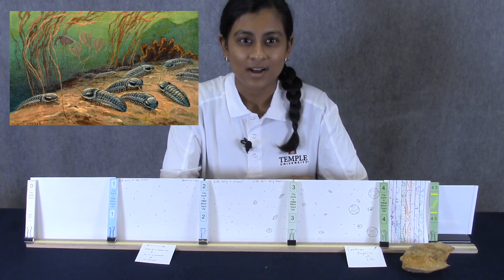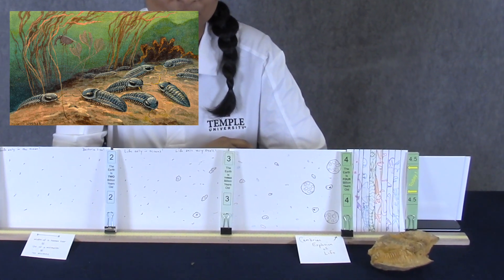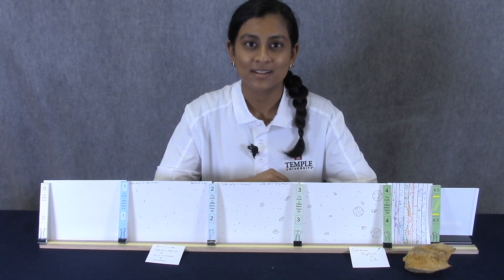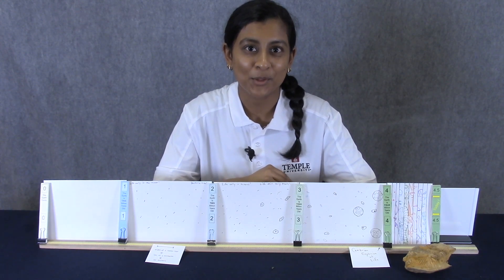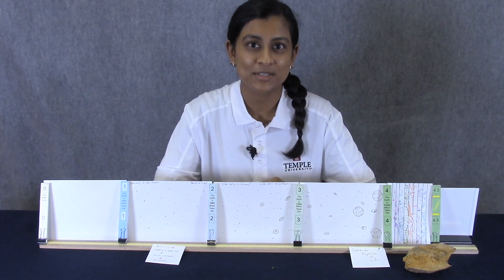The oldest trilobite fossils that have ever been found lived about 500 million years ago, which is approximately right here on our timeline. So, the main evidence that scientists use to figure out the age of our Earth are fossils and the ages of certain types of rocks.